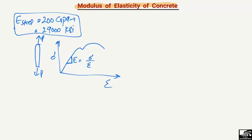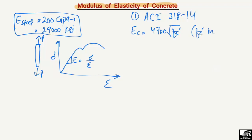The first code is ACI 318-14, which gives the equation for the modulus of elasticity of concrete: Ec = 4700 × √(f'c), where f'c is in units of MPa. You simply use this equation — the result also comes out in MPa.